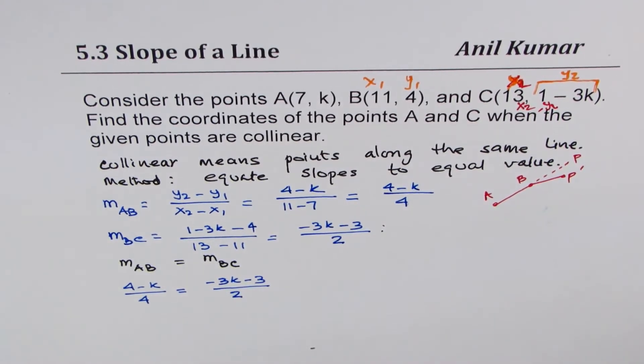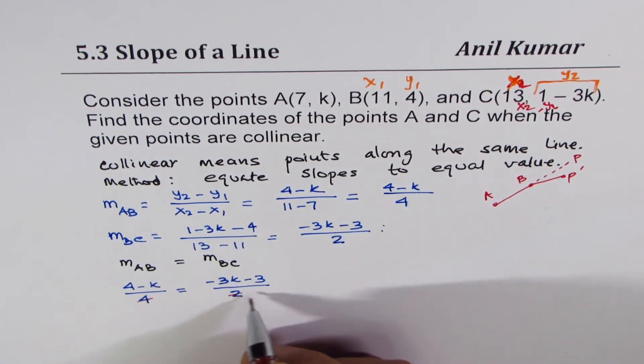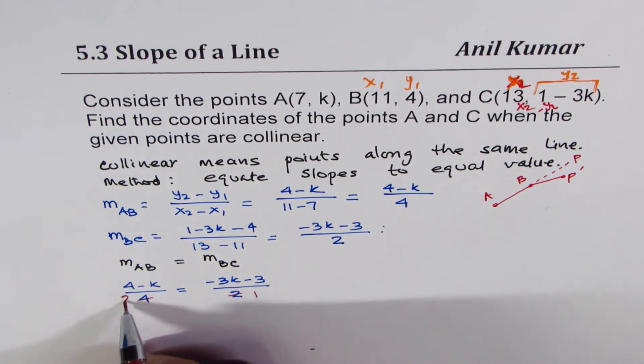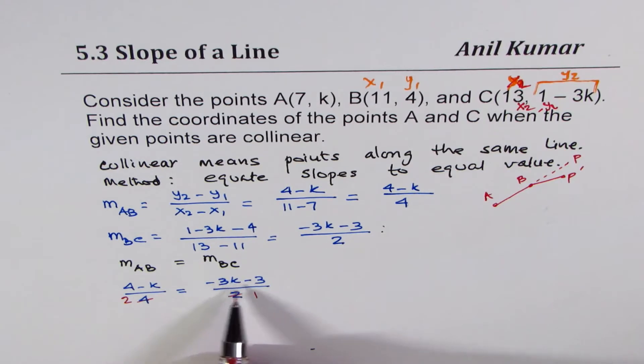So at this stage, you can actually simplify the equation also. You can divide both denominators, simplifying them by 2. You get 4 minus K over 2 equals to minus 3K minus 3. It's a good step to do. So I prefer to do this.